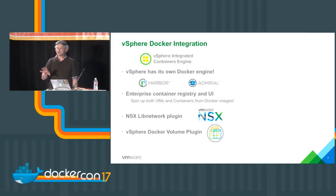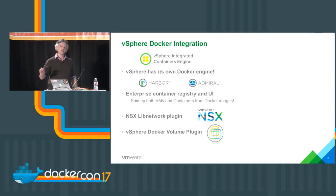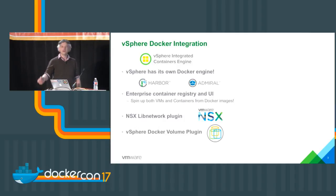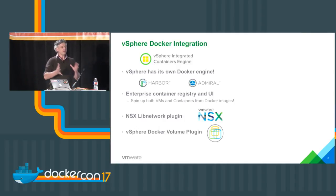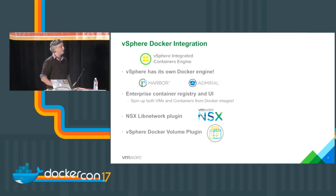With storage we're doing a similar thing. We have a Docker volume plugin that allows you to connect disks in vSphere directly to Docker containers and mount them in the containers. The beauty of this is that if you have shared storage like vSAN, iSCSI, or NFS, you create a volume in that shared storage and your container can see that persistent data anywhere it gets migrated to, because it's on a vSphere datastore. That's super cool.